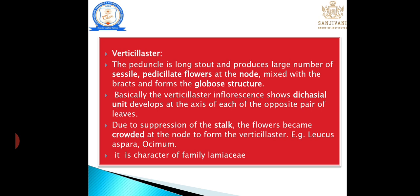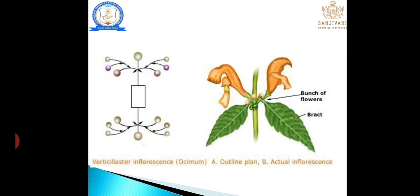Verticillaster: the peduncle is long and stout, with a large number of sessile flowers at the node mixed with bracts, forming a globose structure. Basically, verticillaster inflorescence shows a dichasial unit. Each opposite pair of leaves, due to suppression of the stalk, causes flowers to become bunched and crowded. For example: Ocimum. At the nodal region the dichasial unit flowers are produced and due to compression they form a bunch of flowers.